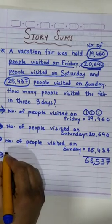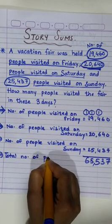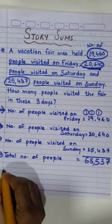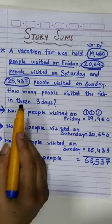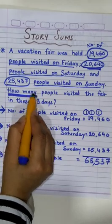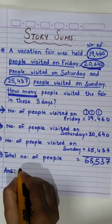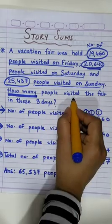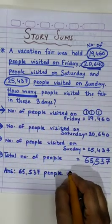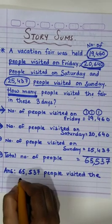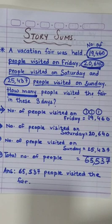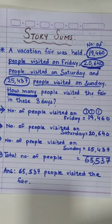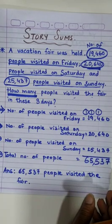Our last statement is: total number of people is equal to 65,537. We will also write the statement for the answer. For writing the answer statement, instead of 'how many' we write our answer: 65,537 people visited the fair in these three days.